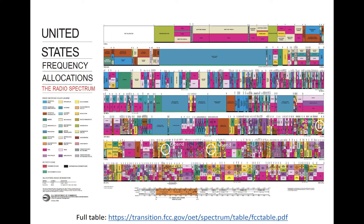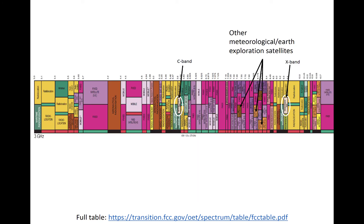The next figure is zoomed in on the second to bottom row on the previous slide. Again, C-band and X-band are circled, and black arrows point to other meteorological and Earth exploration satellite allocations.